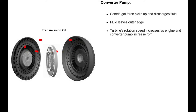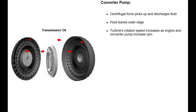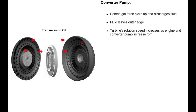Next, the fluid leaves the outer edge of the converter pump, hitting the outside of the rim of the turbine, and through deflection causes the turbine to rotate. The turbine's rotation speed increases as the engine and converter pump increase RPM.